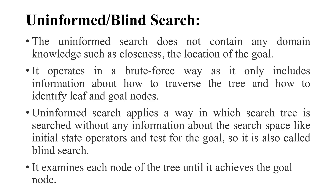It operates in a brute-force way, meaning trial and error. It only includes information about how to traverse the tree and how to identify leaf and goal nodes. It does not have any extra knowledge about the goal or the problem. Uninformed search operates without any information about the search space, such as the initial state, operators, or the test for the goal.